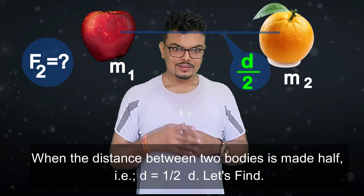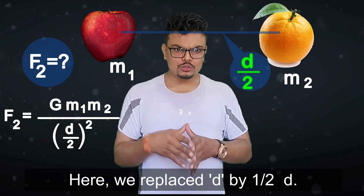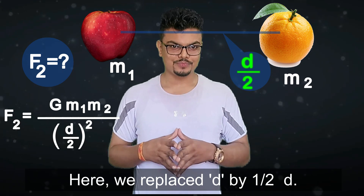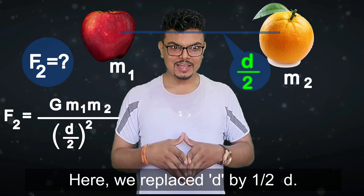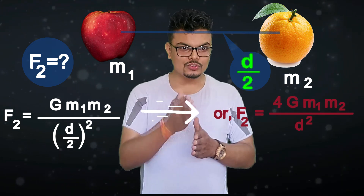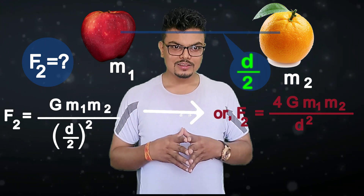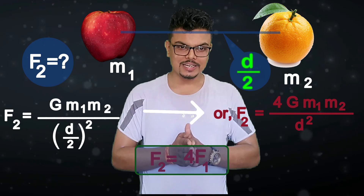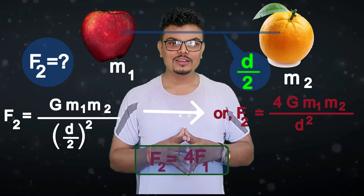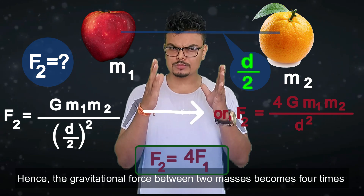Now what changes do we get in gravitational force when the distance between the two bodies is made half? F2 equals G times m1 times m2 divided by (d/2) squared. Here we replaced d by d/2, so F2 equals 4 times G times m1 times m2 divided by d squared. Therefore F2 equals 4 times F1.